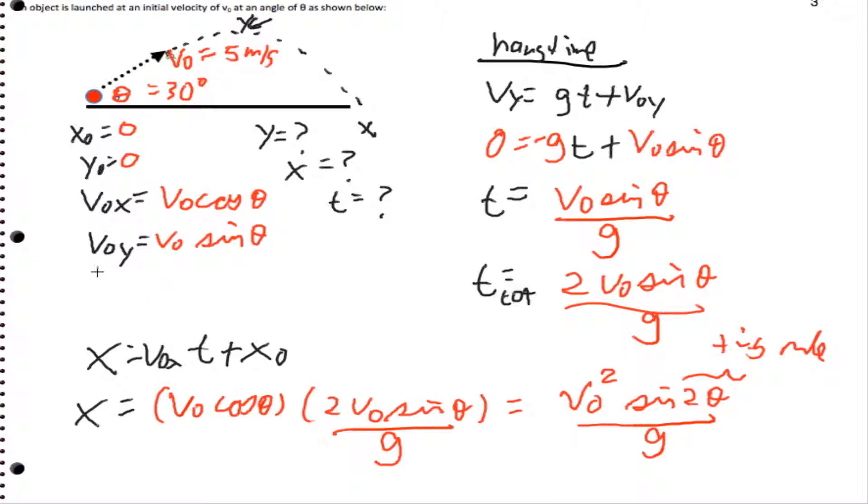I'm going to use vy squared equals v0y squared plus 2gy minus y0. So when I plug in my numbers here, vy at the top is going to be 0 squared. I know that v0y is going to be v0 squared sine squared theta plus 2gy minus 0.